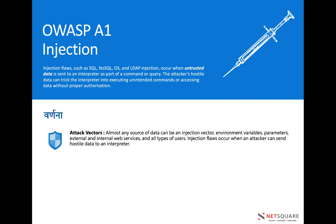What is the attack vector for injection? Almost any source of data can be used as a vector, like environment variables, parameters, headers, internal web services — all types of user input directly involved in server-side operations. All these entry points can be considered attack vectors when an attacker sends hostile data to the interpreter.